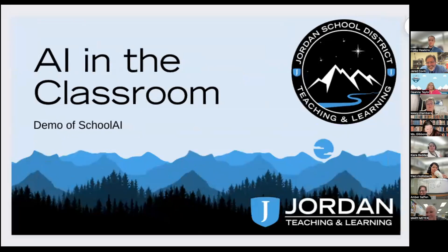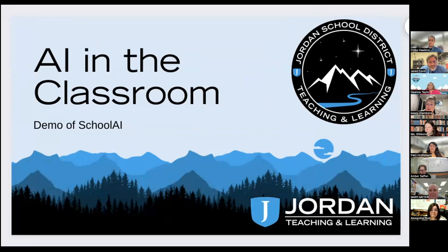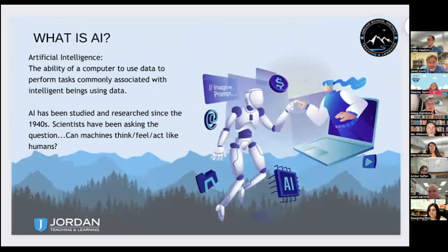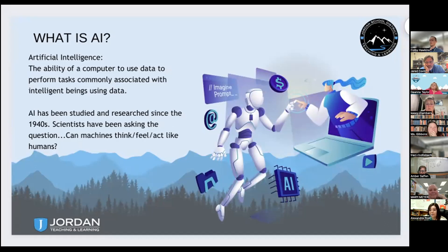I wanted to give a little bit of background before we dive right into the School AI demo. First, what is AI? Artificial intelligence is the ability of a computer to use data to perform tasks. The crazy thing is AI has been around for a while — I think a lot of us feel like there are new robots coming at us, but no, it's been there for a while. We're just coming up with new ways and improvements.